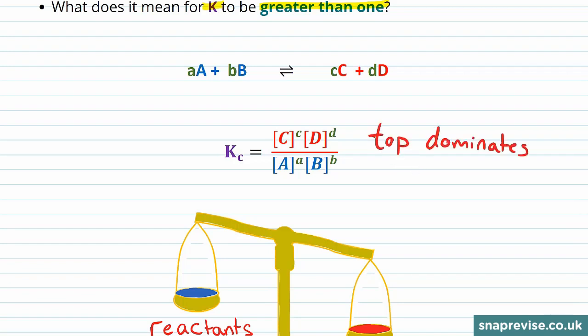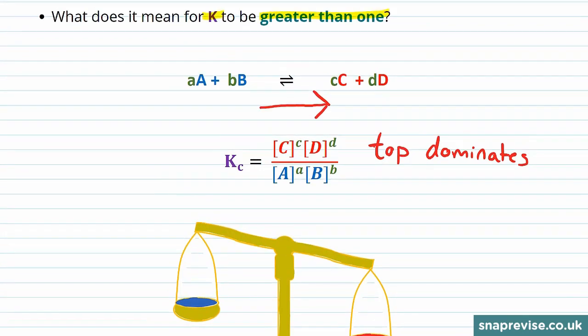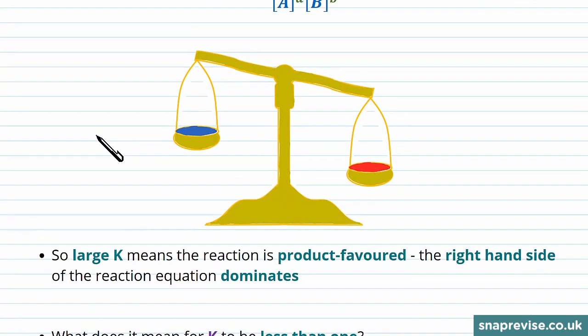This means the equilibrium must lie further towards the products because the products are what goes in the top of the expression for Kp. So we can show that with this picture where the balance is tipped towards the products, and this would happen when the equilibrium constant K is greater than 1.